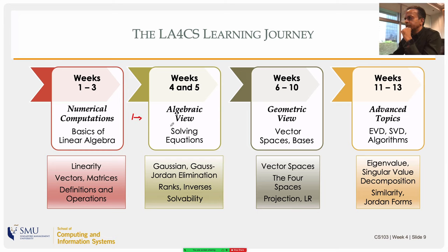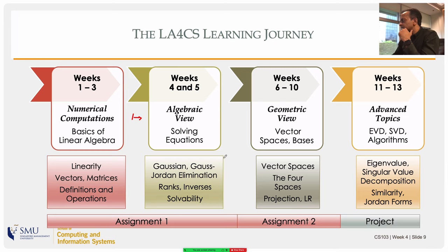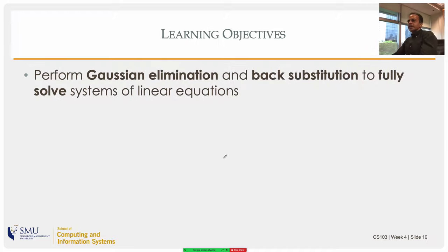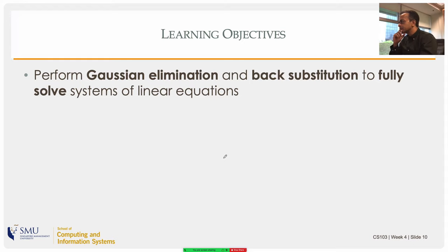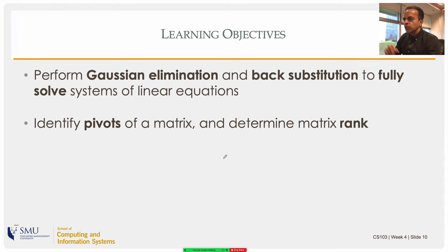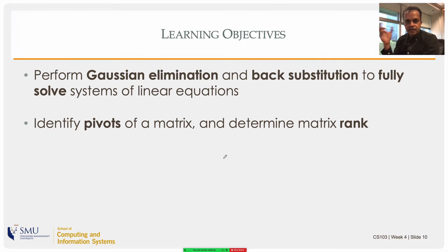Today's learning objective is to understand Gaussian elimination and how to solve equations using back substitution. Along the way we'll define things like the pivots of a matrix and its rank.